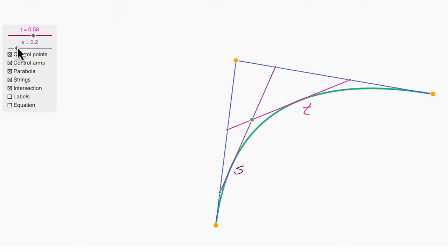So as I make s closer and closer to t, watch what happens to this intersection point. It moves and it gets closer and closer to the parabola, and exactly when s equals t,